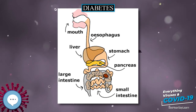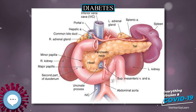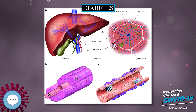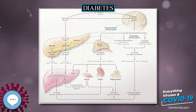The ICD-10 (1992) diagnostic entity malnutrition-related diabetes mellitus (MRDM or MMDM, ICD-10 code E12) was deprecated by the World Health Organization (WHO) when the current taxonomy was introduced in 1999. The following is a list of disorders that may increase the risk of diabetes.